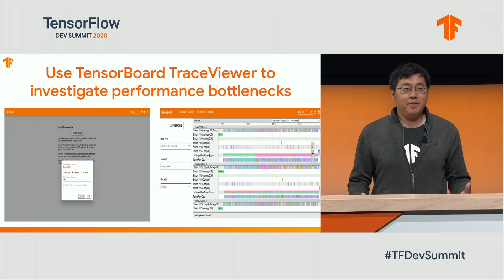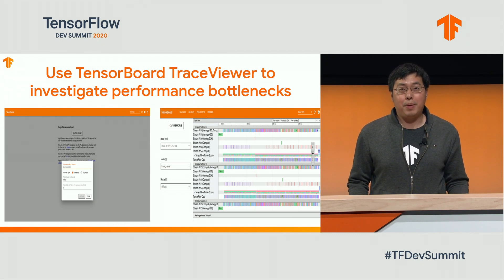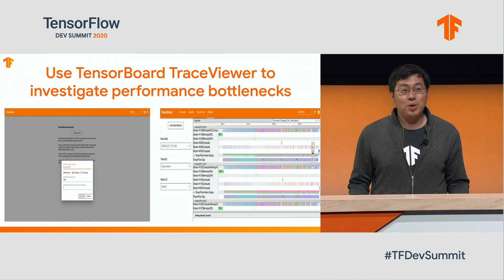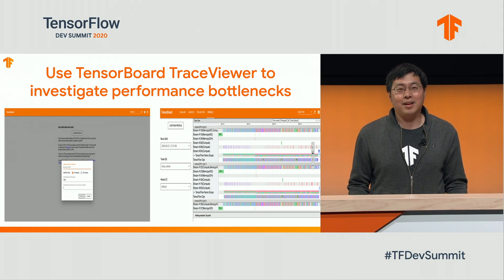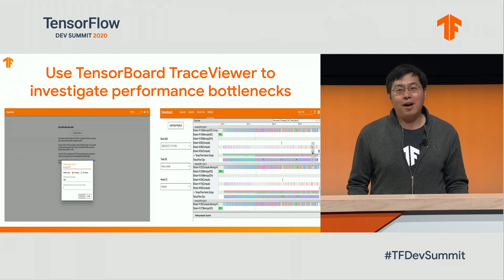With so many phases in deep learning training, how do we identify where the bottleneck is? Is it in the forward path, backward path, gradient aggregation, or variable updates? How do we know where to optimize? Of course, we are going to use the TensorFlow Profiler, which was just introduced earlier today. So let's start by running the BERT SQuAD model, log into a VM, fire up TensorBoard, take a profile, and open the Trace Viewer.